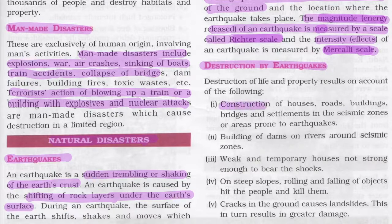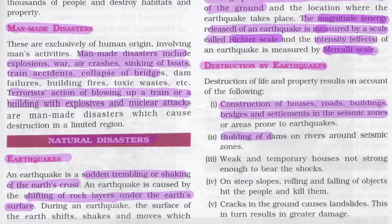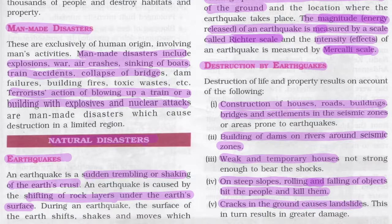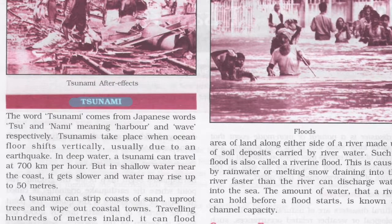Destruction by earthquakes results from construction of houses, roads, buildings, bridges, and settlements in seismic zones. Building dams on rivers near seismic zones, and weak or temporary houses that cannot bear the shocks, also contribute. On steep slopes, rolling and falling objects hit and kill people, and cracks in the ground cause landslides, resulting in greater damage.